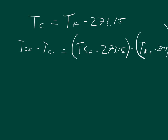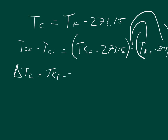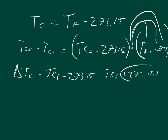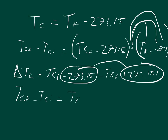If we distribute the negative sign to our two terms, the change in temperature in Celsius equals the temperature in Kelvin final minus 273.15, minus the temperature in Kelvin initial — and when we distribute the minus sign to the negative 273.15, we get plus 273.15. The positive 273.15 and the negative 273.15 cancel each other out. So we get that the change in temperature in Celsius equals the temperature in Kelvin final minus the temperature in Kelvin initial — in other words, ΔC = ΔK.